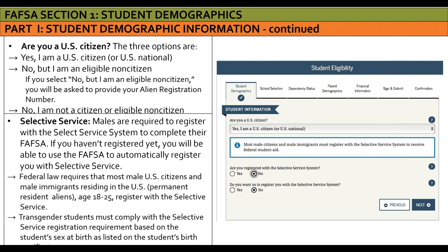There's a question asking if they're a U.S. citizen with three options: yes, U.S. citizen or national; no, but an eligible non-citizen (where they provide their alien registration number); or no, not a citizen or eligible non-citizen, in which case they should fill out the California Dream Act application instead. If they previously indicated they are male, the FAFSA asks if they're registered with the Selective Service System, which is a federal requirement for receiving federal aid. If not yet registered, they can register directly within the FAFSA.